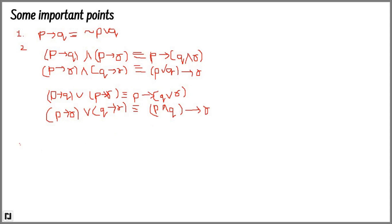These points are for the implication. The next point is for biimplication. If we are given P biimplication Q, then it is equivalent to (P implies Q) AND (Q implies P).